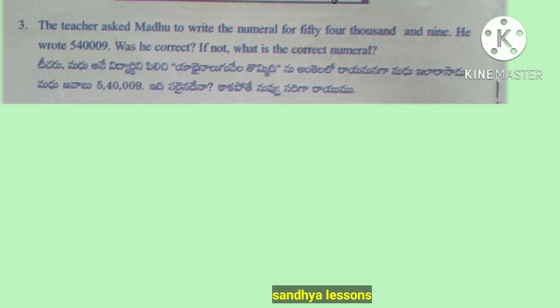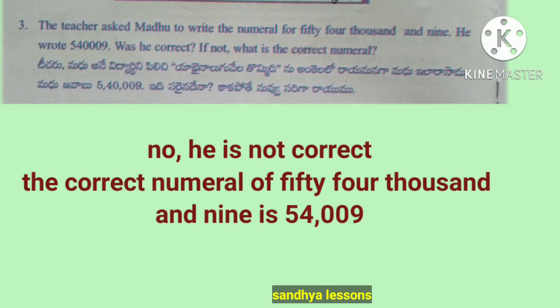Third problem: the teacher asked Madhu to write the numeral for 54,009. He wrote 5,40,009. Was he correct? No, he is not correct. The correct numeral for 54,009 is 54,009.